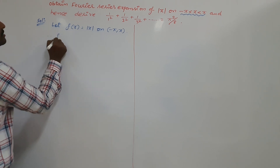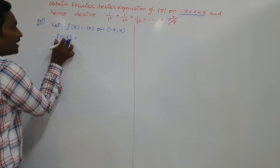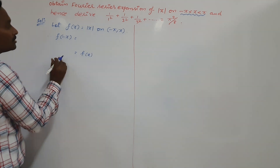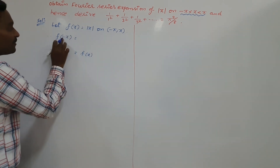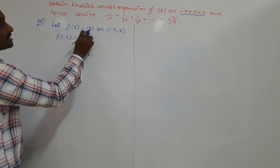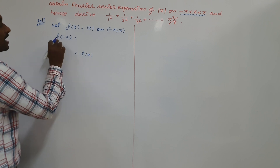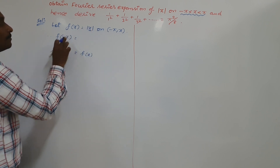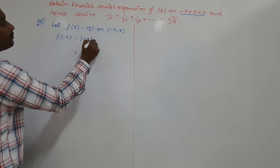For that purpose, calculate f of minus x. If f of minus x equals f of x, we conclude the given function is an even function. If f of minus x equals minus f of x, then it is an odd function. Here, f of minus x means in this function wherever we have x, blindly replace it by minus x — so we get modulus of minus x.